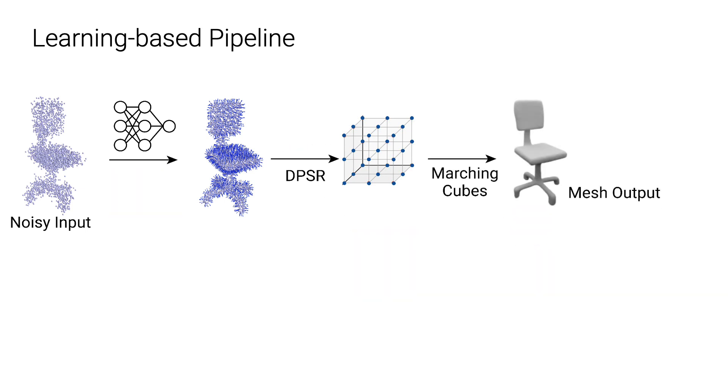During the inference, the network output is passed into our DPSR, and we can then extract a mesh from the predicted indicator grid.